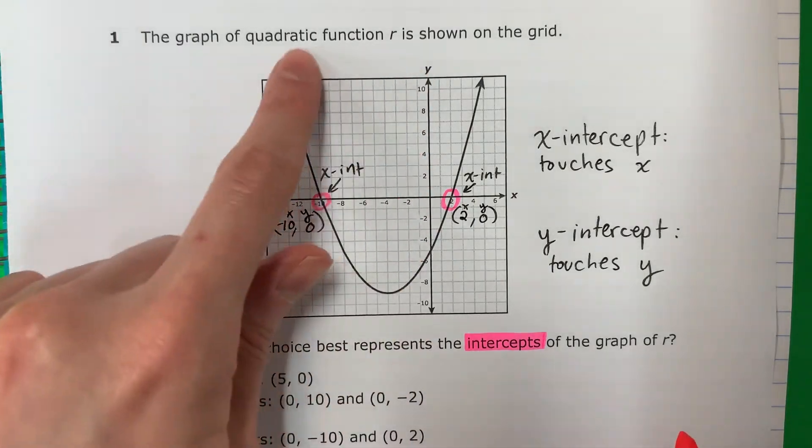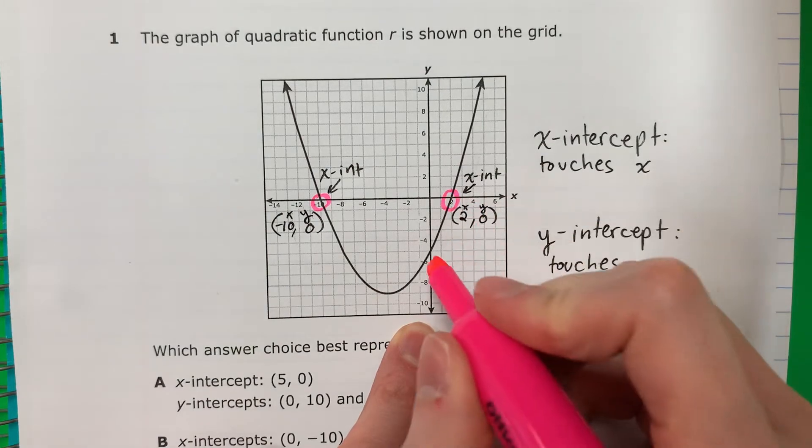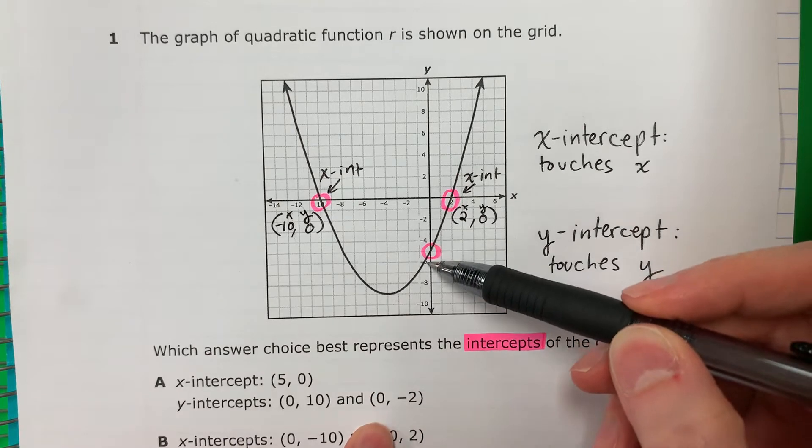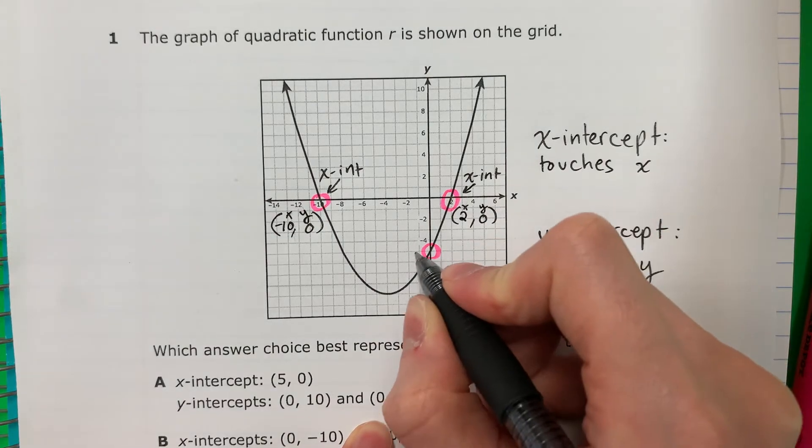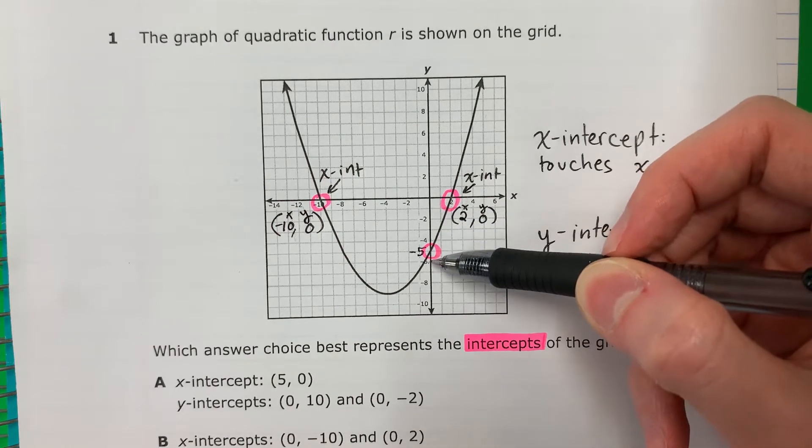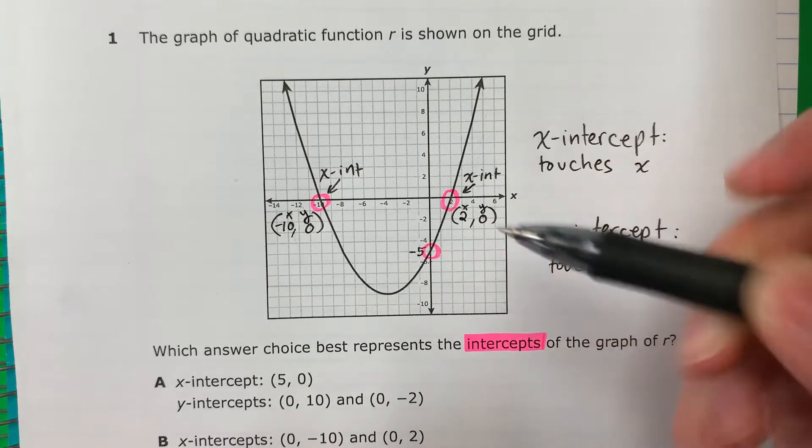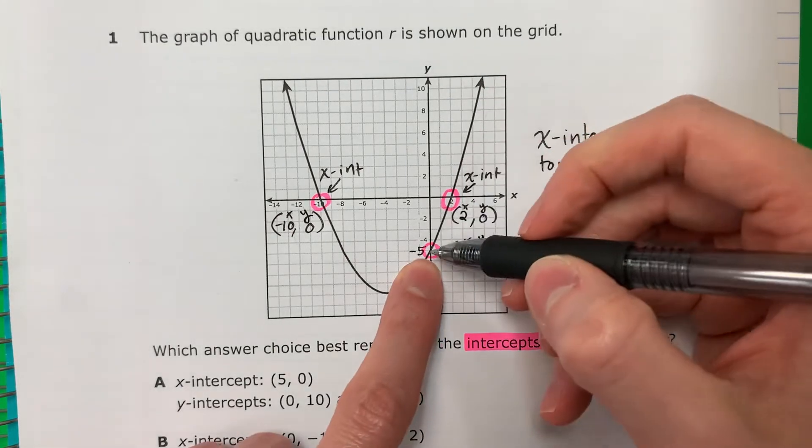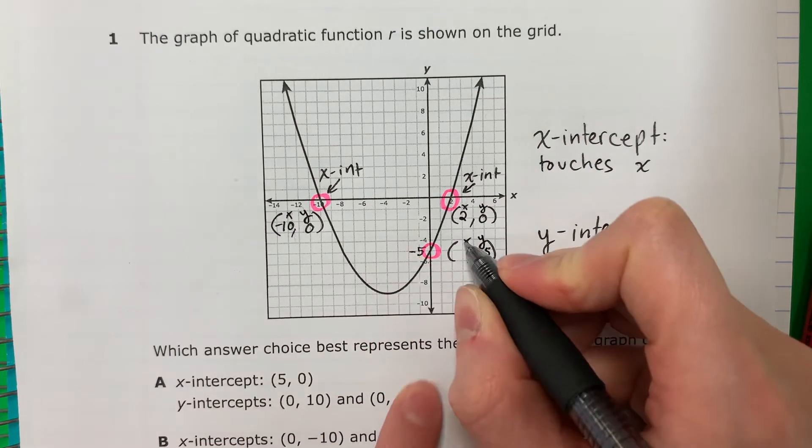Now for the y-intercept. Where does this touch y? Donde se toca y? It's right over here. So what number is between negative 4 and negative 6? Cuál número está entre negativo 4 y negativo 6? Negative 5. That is negative 5 right over here. Because this is negative 1, negative 2, negative 3, negative 4, negative 5, negative 6. So this, x, y. This negative 5 is y. Este negativo 5 es y. So negative 5 is y, x is 0.